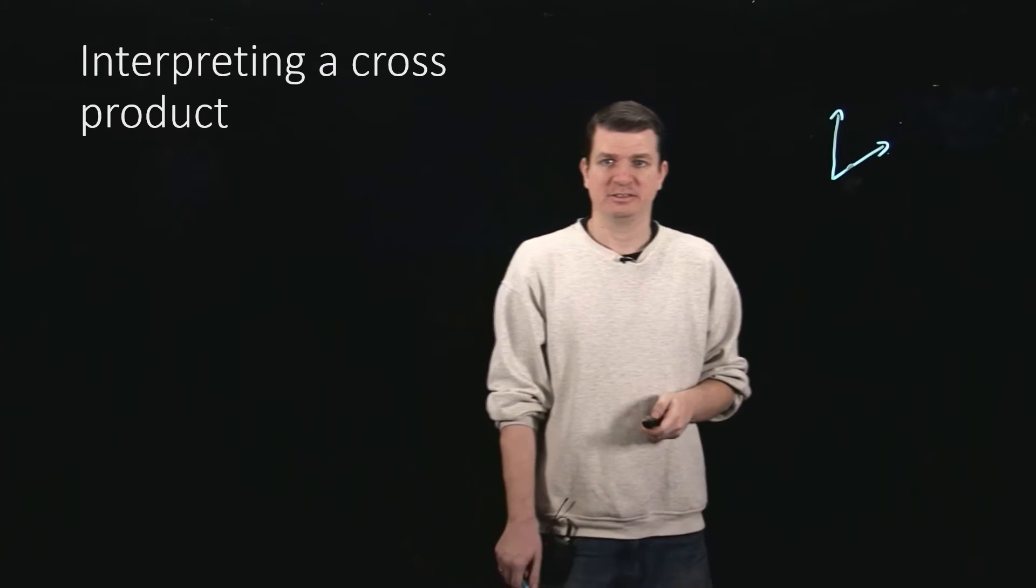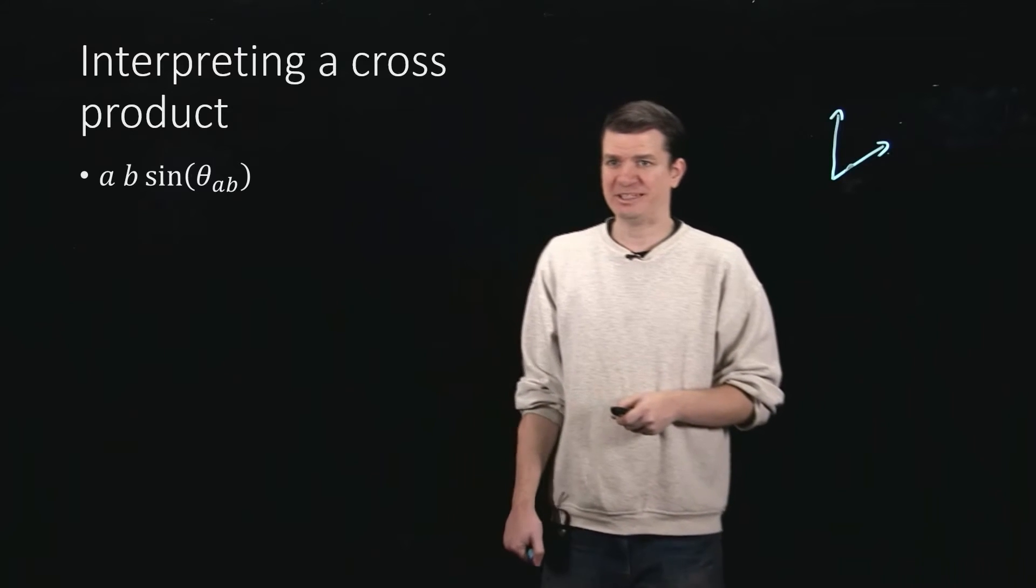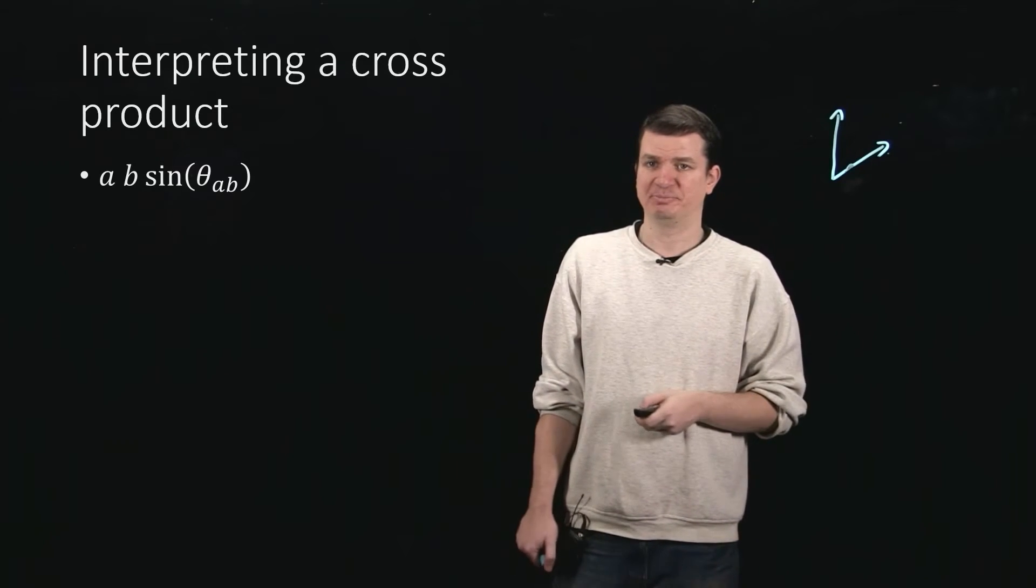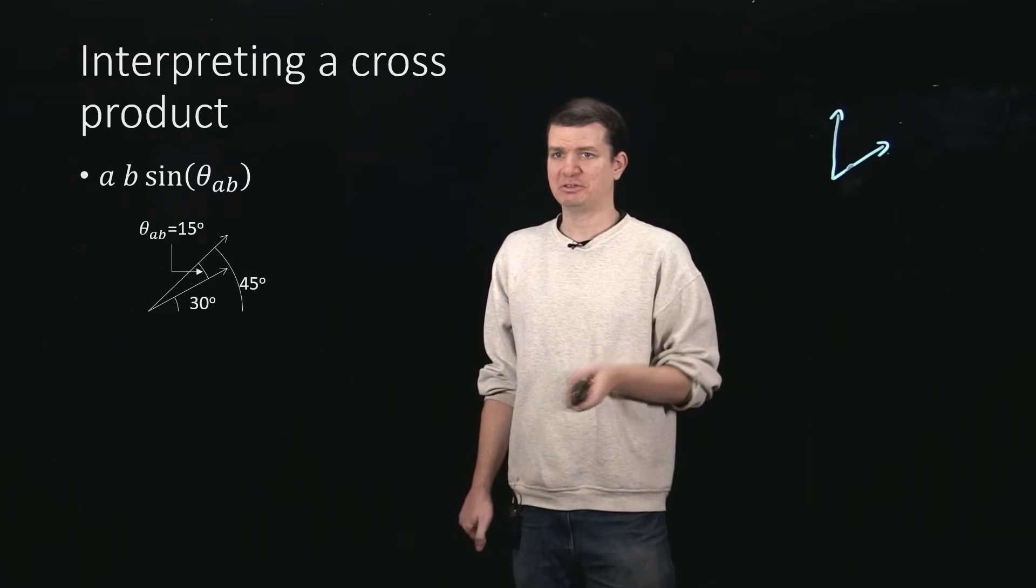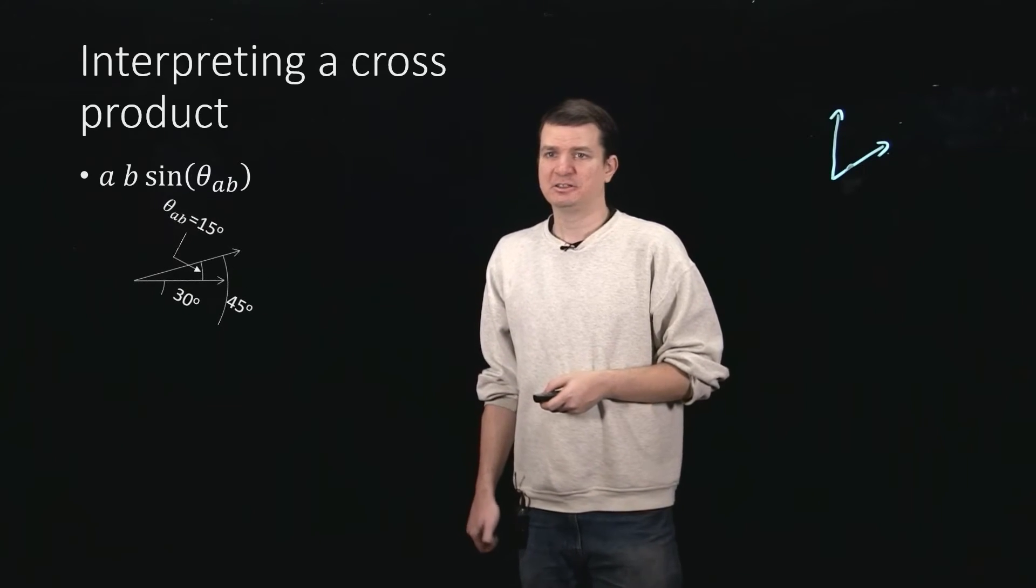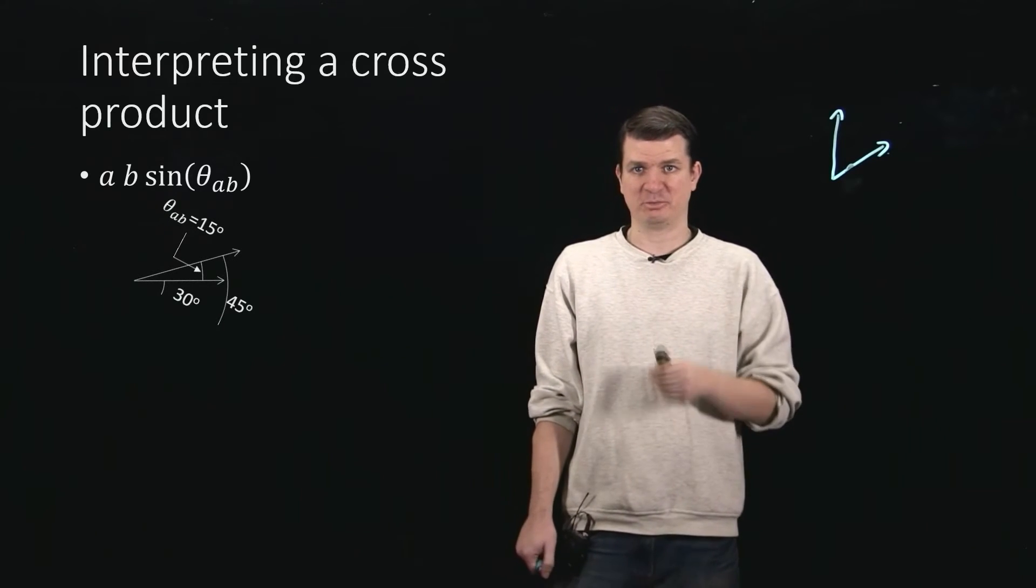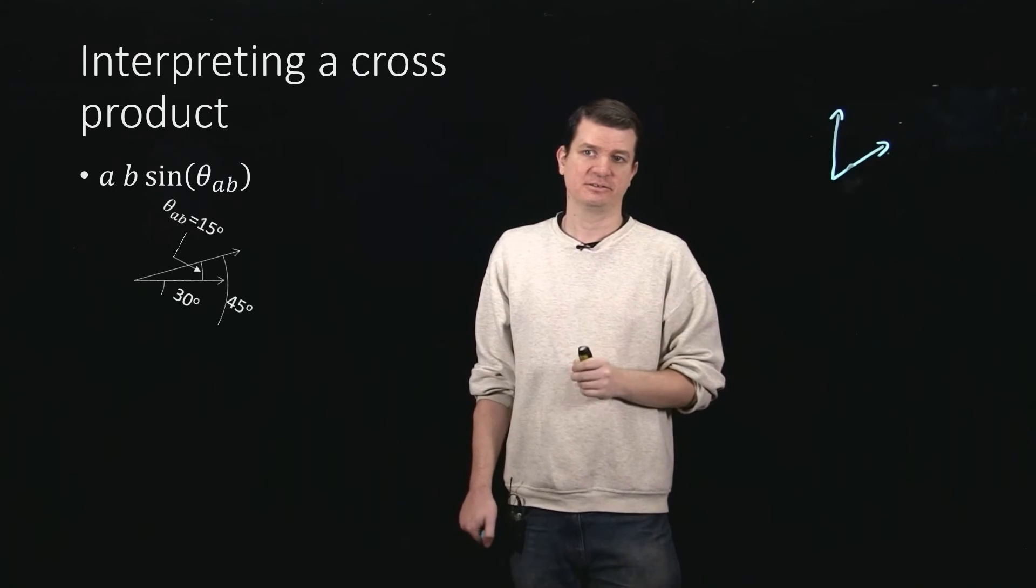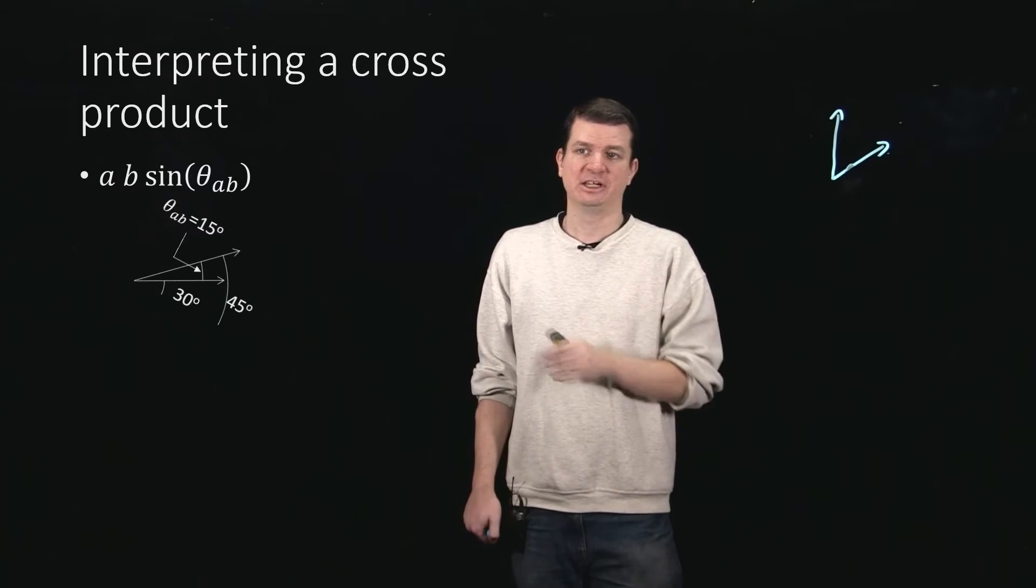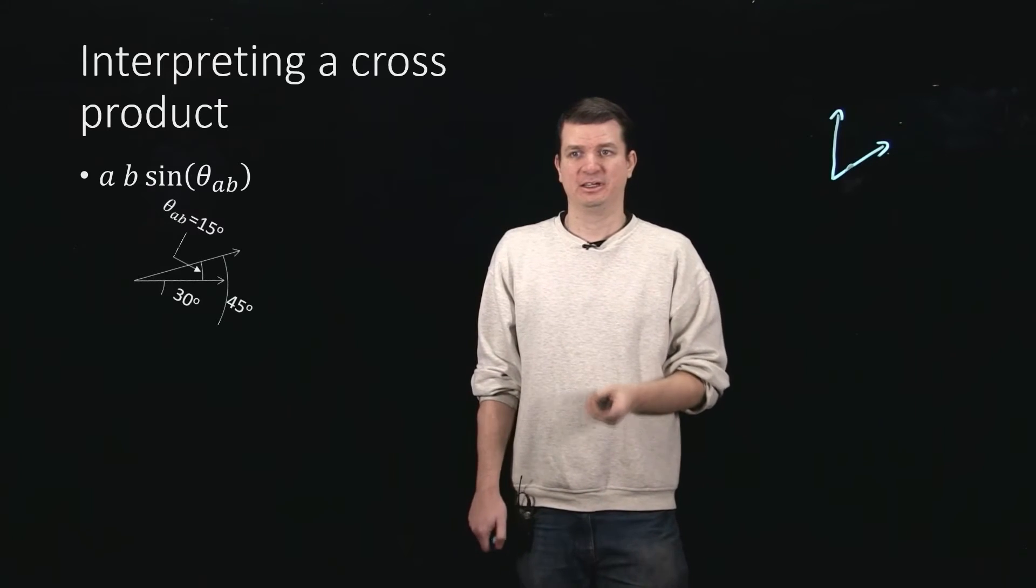So a times b times sine of the angle between them. Now remember, with the dot product we saw that if you just rotate this thing, then you can start thinking about the cosine of the angle as giving you the projection of the second vector with respect to the first. So the dot product, taking a cosine, was giving you the component of the second vector that was lying along the first vector.